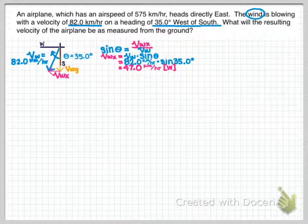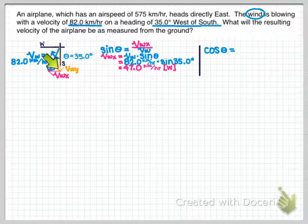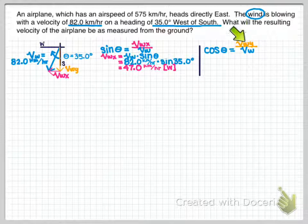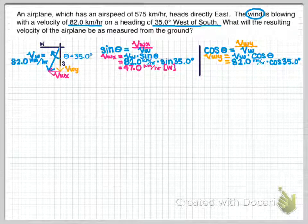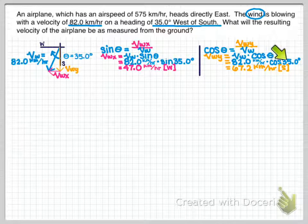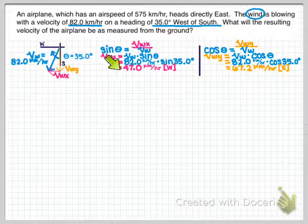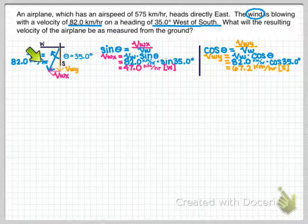Now using cosine: cosine of theta equals adjacent over hypotenuse. The adjacent is VWY and the hypotenuse is VW. Solving for VWY: VWY equals VW times cosine theta. Plugging in numbers and making sure you're in degree mode — cosine of 35 degrees — you get 67.2 kilometers per hour to the south. So those are my wind components; these two together are the same as the 82 kilometers an hour.